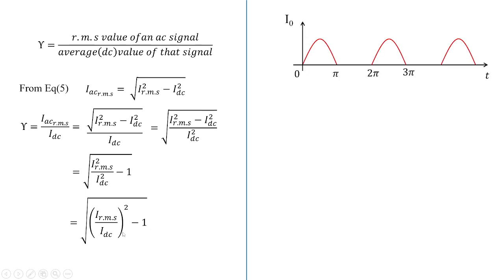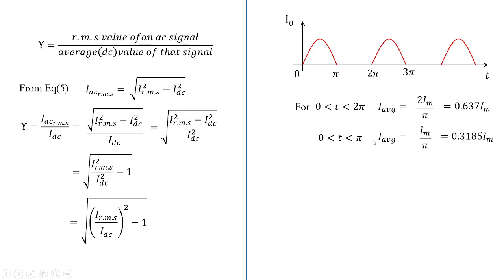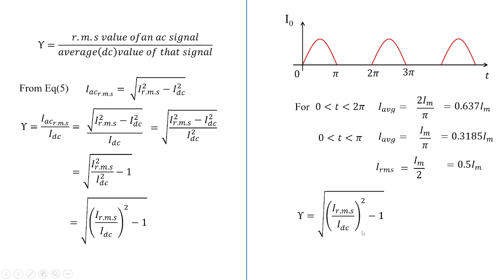For a half wave rectifier, you should know the average (DC) value and the RMS value. The average value over 0 to π is 0.3185·I_M, and the RMS value is 0.5·I_M. You can refer to our previous videos for these derivations. Substituting these values into the ripple factor formula gives a value of 1.21. So the ripple factor of a half wave rectifier is 1.21.